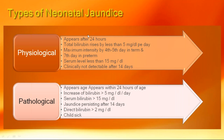Pathological jaundice, by contrast, appears within the first 24 hours, rises more than 5 mg/dL per day, total bilirubin may cross 15 mg/dL, jaundice persists beyond 14 days, or direct bilirubin exceeds 2 mg/dL. Even if the amount is less than 10 mg/dL but the child looks sick, you must suspect pathological jaundice. These general principles are easy to remember — one set is exactly the opposite of the other.